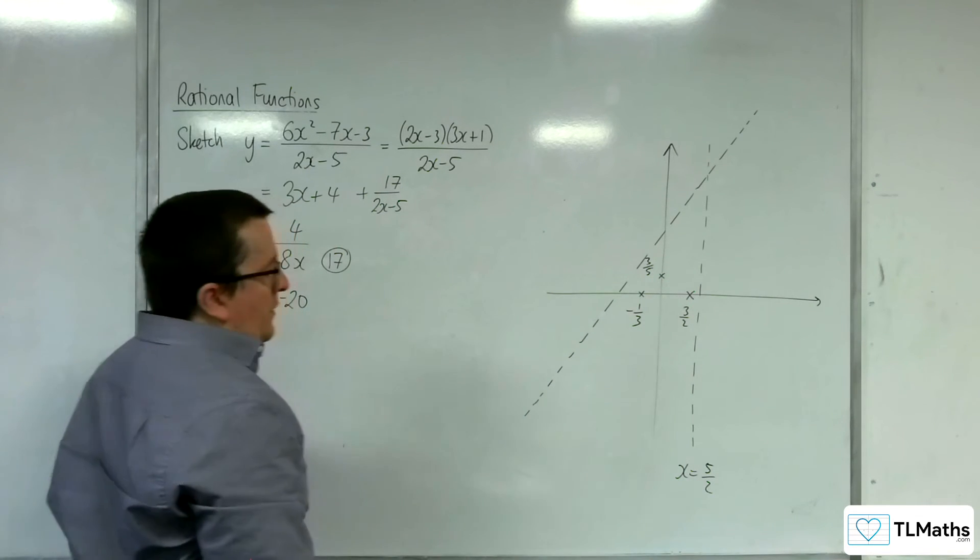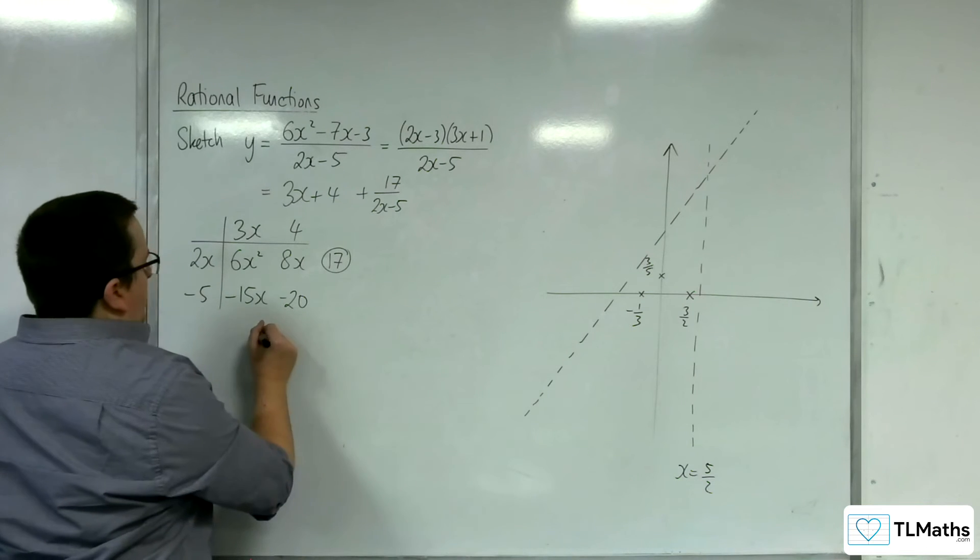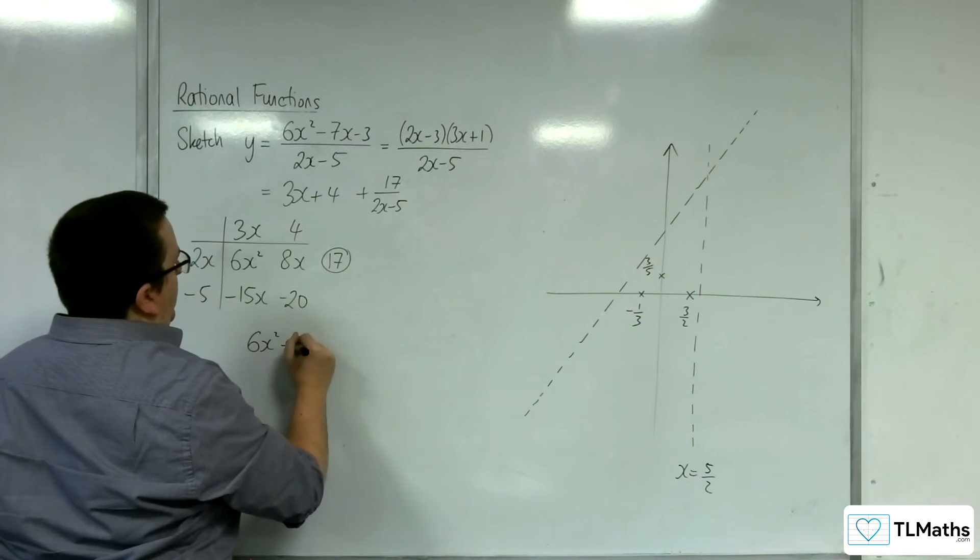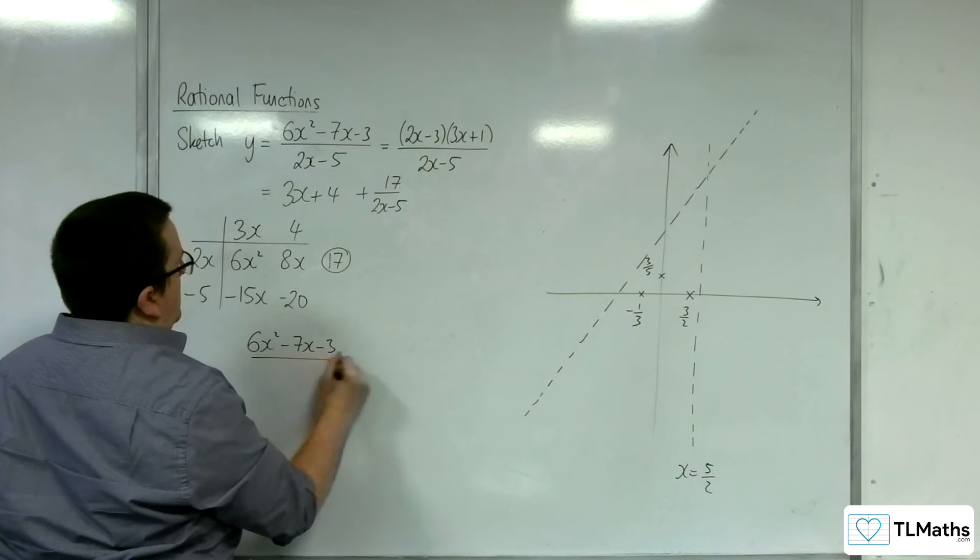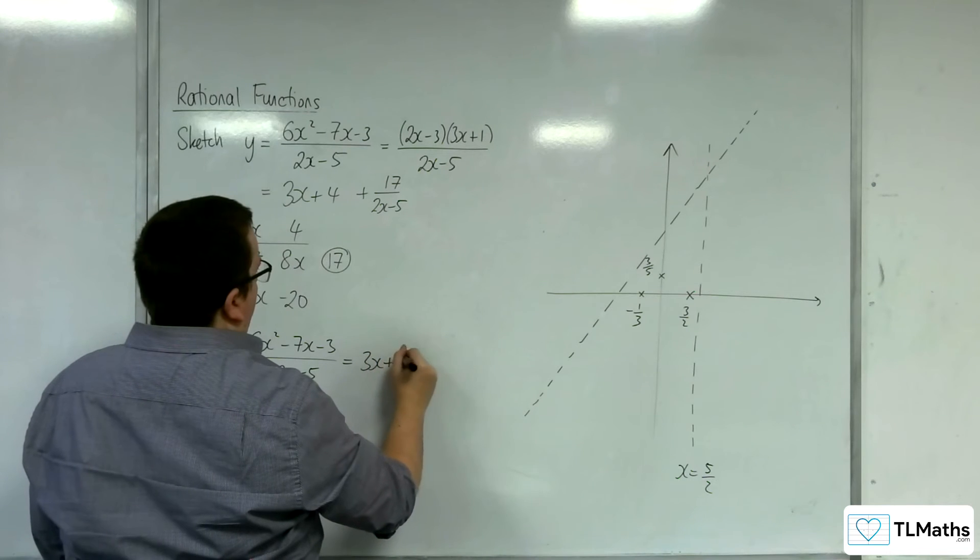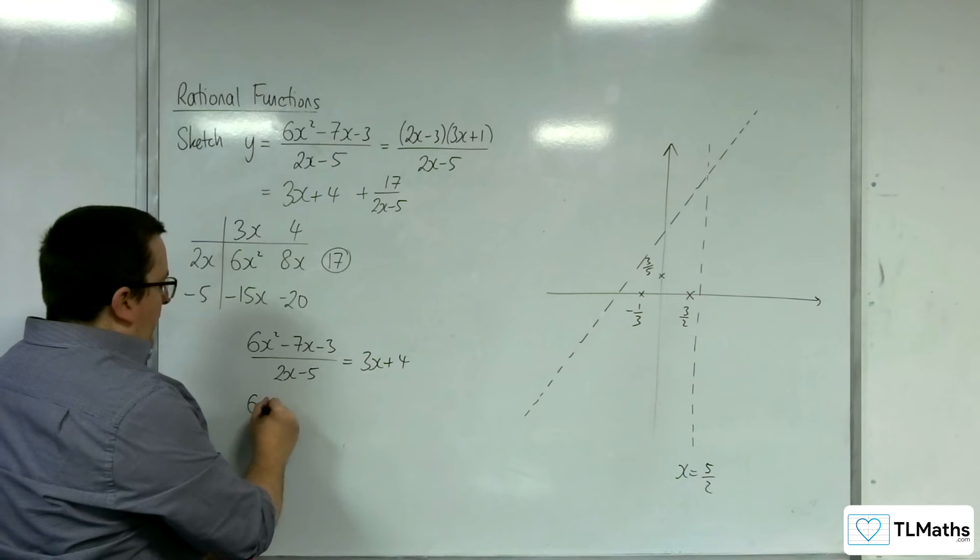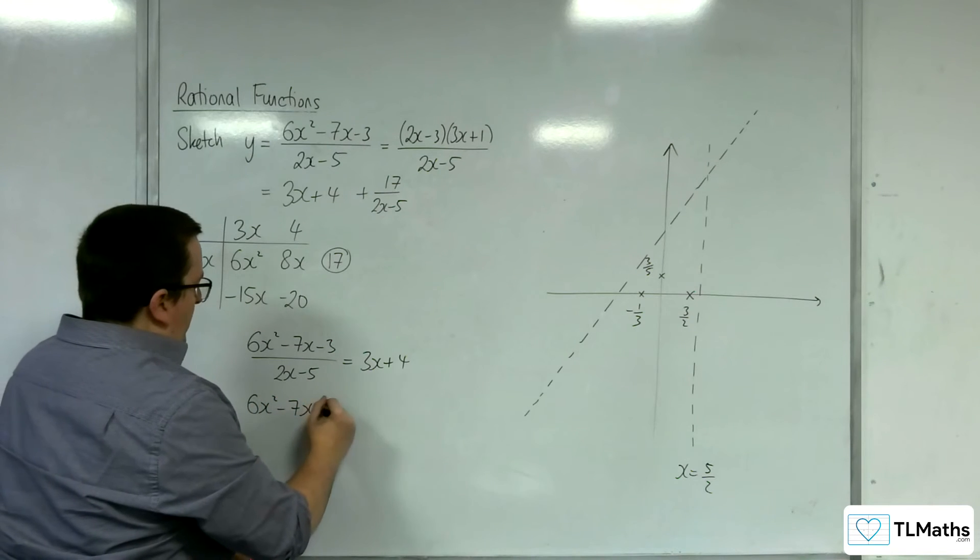Let's double check that the curve doesn't intersect the oblique asymptote. We've got (6x² - 7x - 3)/(2x - 5) = 3x + 4. Multiply by 2x - 5. We get 6x² - 7x - 3.